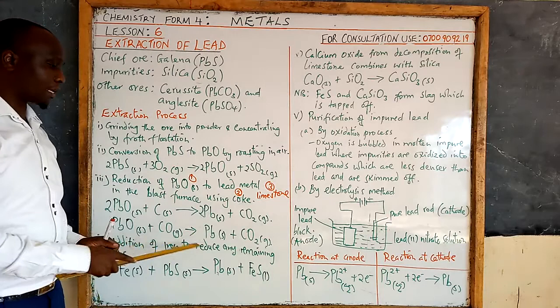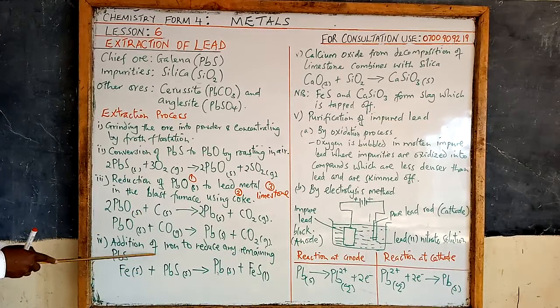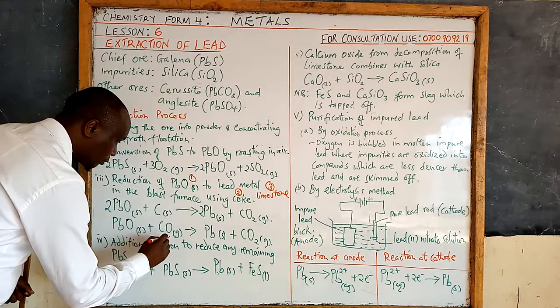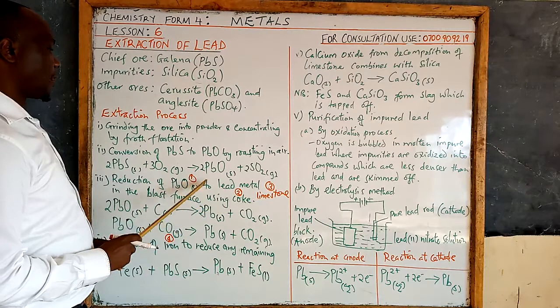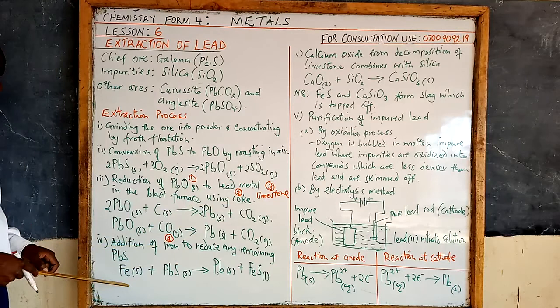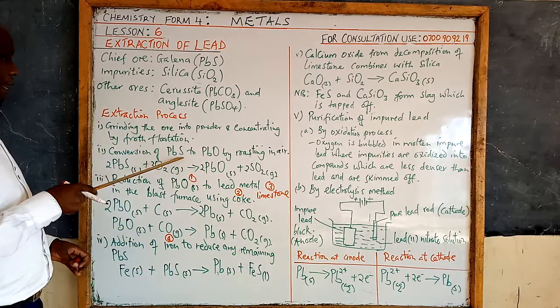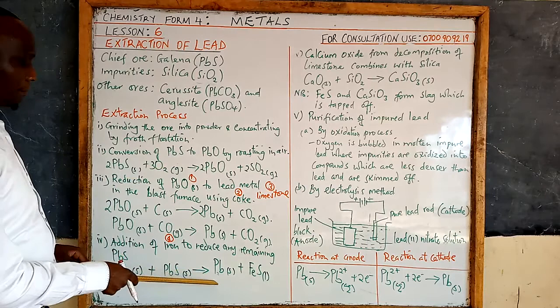Step four: iron is added as a fourth material into the blast furnace. The function of iron is to reduce any lead sulphide which might not have been oxidised. So it will be reduced by iron to lead metal, while iron is oxidised to iron(II) sulphide.